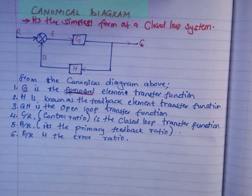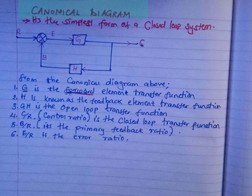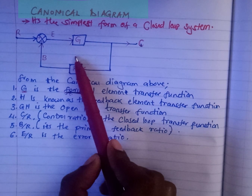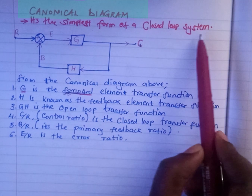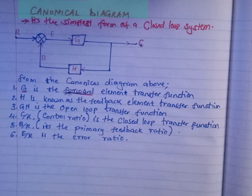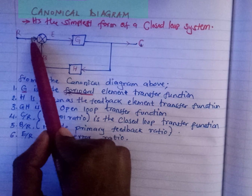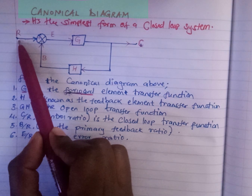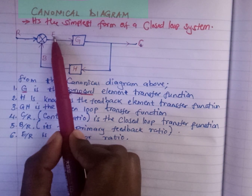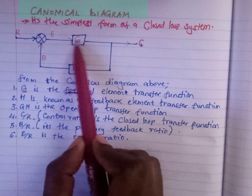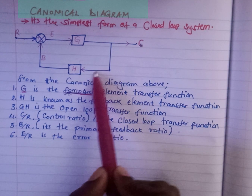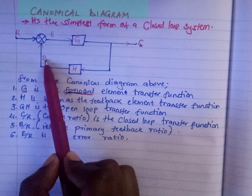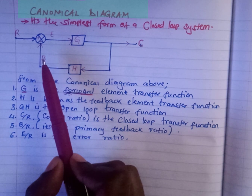Hello and welcome once more to my channel. Today I want us to look at a canonical diagram. As you can see, I have my diagram here. This canonical diagram is the simplest form of a closed loop system. A closed loop system has an input — in this case our input is R — we have the summing point, the error, and the block in the forward path. At this point I have the output C, the feedback element H, and then B.